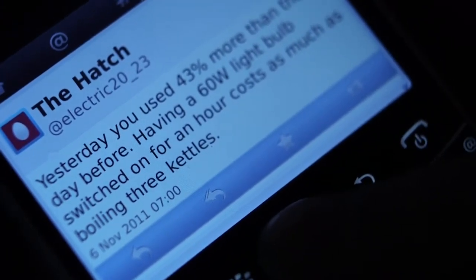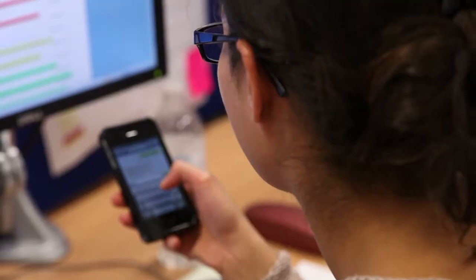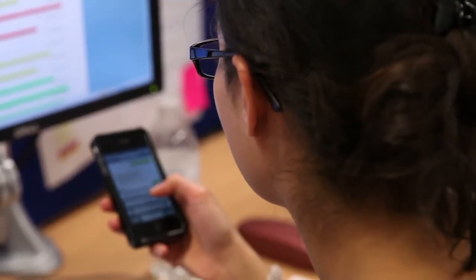We also had the houses send text messages. So people, while they're at work, the house would tell them what happened the previous day. If they switched on a kettle, they'd see their charts on the web update instantly so they could see suddenly how much that kettle was using.